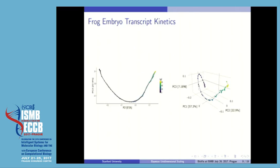Another set of plots we offer is the projection of the dataset onto 2D and 3D. On the left, we see the first two principal components, and on the right, we see the first three principal components plotted together with the mode of the data trajectory that we recovered.